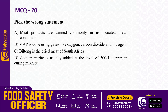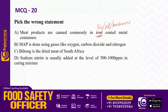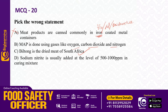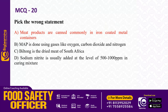Pick the wrong statement. Option A: meat products are canned commonly in iron-coated metal containers — this is wrong; they use tin, aluminum, or stainless steel-coated containers. Option B: modified atmospheric packaging (MAP) is done using gases like oxygen, carbon dioxide, and nitrogen — correct. Option C: biltong is the dried meat of South Africa — correct. Option D: sodium nitrite is usually added at the level of 500 to 1000 ppm in curing mixture — correct. So option A is the wrong statement. Thank you.